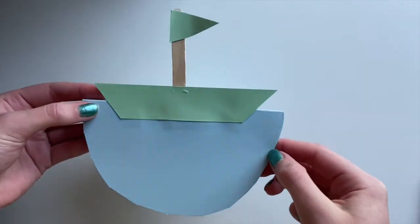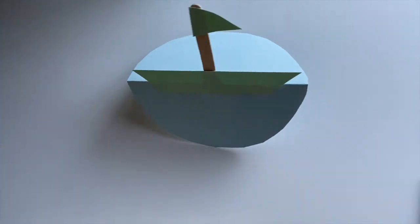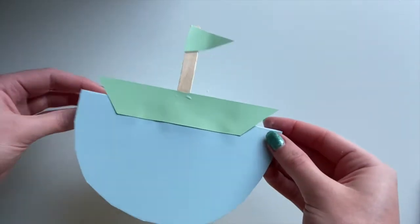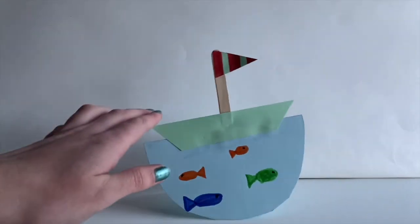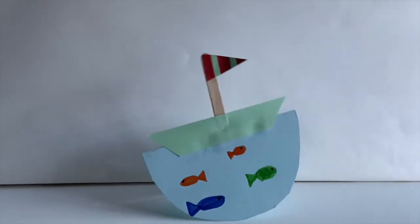And now we have our final rocking boat. Push down the sides of the water to see the craft rock back and forth. If you'd like to, you can decorate your boat. I drew some red stripes on the sail of mine and some fish in the water.